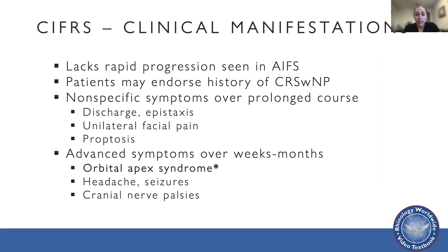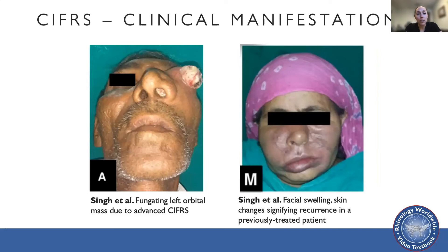Examination is often significant for congestion, polypoid tissue, or perilymph mucus. Fungal burden or nasal masses may also be seen. Occasionally, a unilateral mass is found, and ophthalmologic findings may include proptosis, ophthalmoplegia, and orbital examination may be significant for palatal erosion or fistula if advanced disease is present. Here are pictures of clinical manifestations of chronic invasive fungal sinusitis: on the left, a report of a fungating orbital mass by Singetal, where advanced disease may resemble malignancy. On the right, a previously treated patient with open surgery for orbital floor involvement with adjunct amphotericin treatment, who suffered several recurrences—this photo depicts recurrence as skin changes about five years postoperatively.